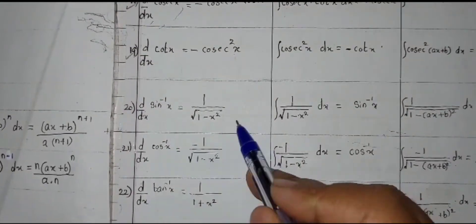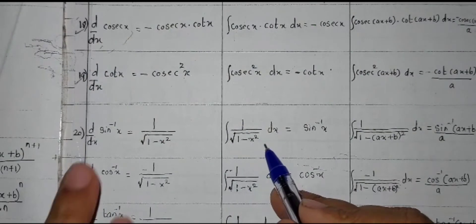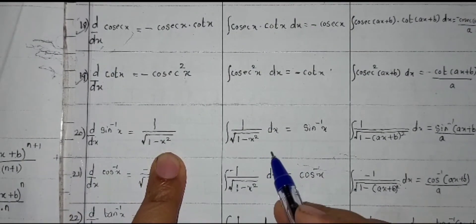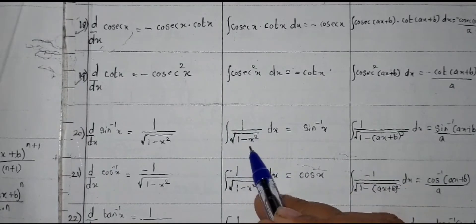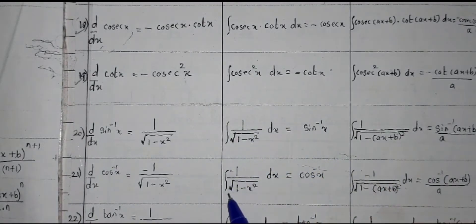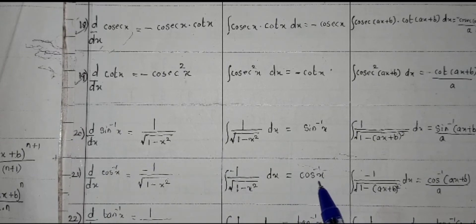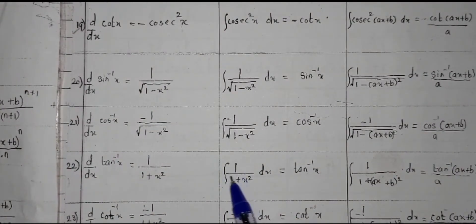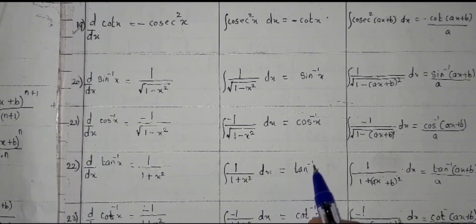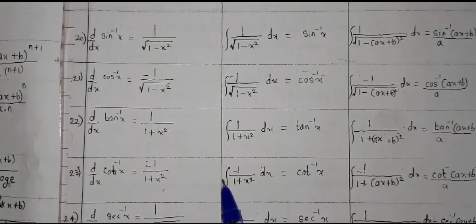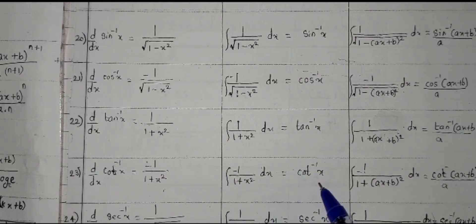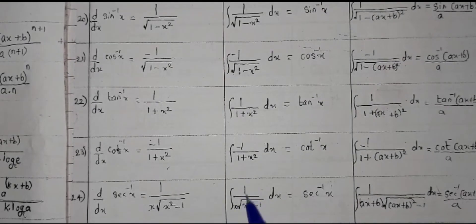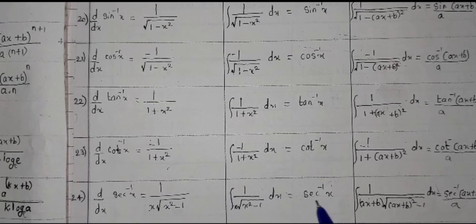Coming to integration of inverse functions: integration of 1 upon root of 1 minus x squared dx is equal to sin inverse of x. Integration of minus 1 upon root of 1 minus x squared dx is equal to cos inverse x. Integration of 1 upon 1 plus x squared dx is equal to tan inverse of x. Integration of minus 1 upon 1 plus x squared dx is equal to cot inverse x. Integration of 1 upon x root of x squared minus 1 dx is equal to sec inverse x.